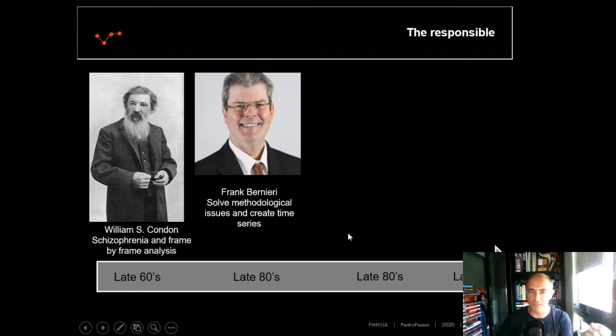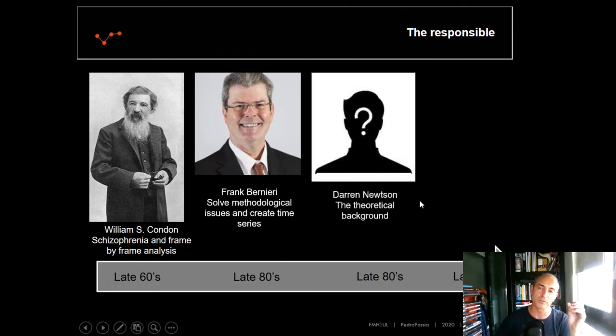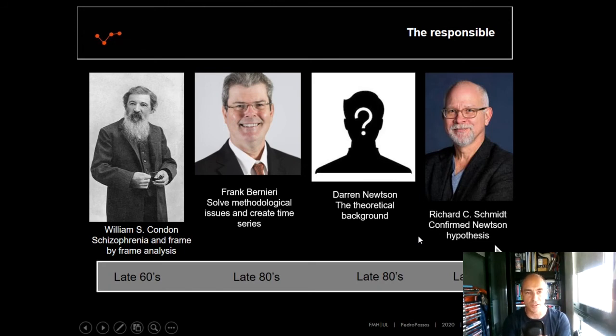It's only with Frank Bernieri that solved this kind of methodological issues and created time series analysis that the interpersonal coordination starts, restarts to grow as a research area. But the boost of this research area was with the hypothesis that was raised by Darren Newton when he set the theoretical background for studies such as the PhD study of Richard Schmitt. Newton's hypothesis was that people are visually coupled when they need to perform coordinate with the other. So Richard Schmitt confirmed this and further studies after Richard's PhD also confirmed that if we have intention or not, we will coordinate with the others as long as we are visually coupled.